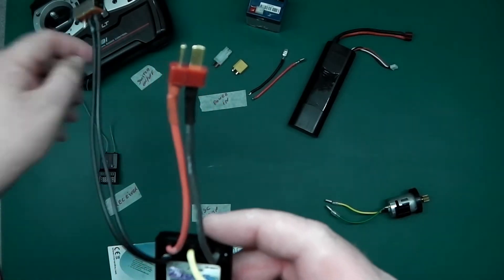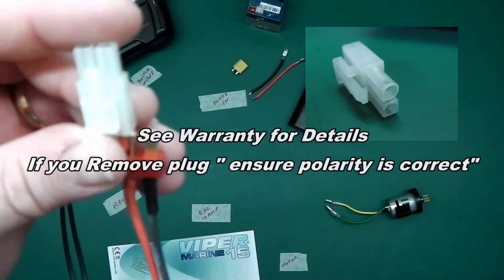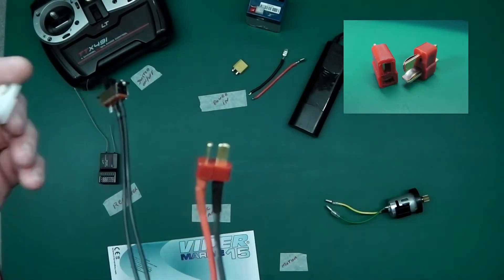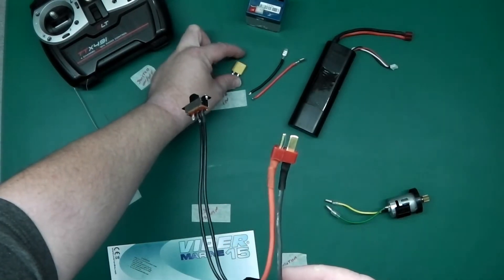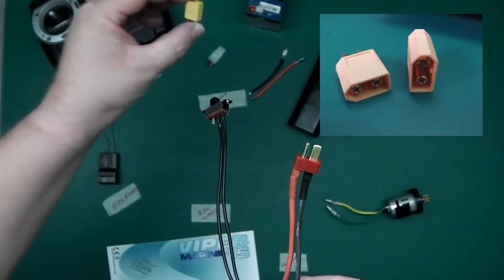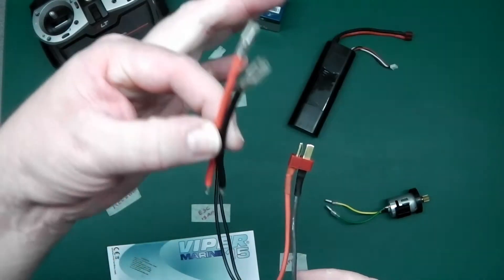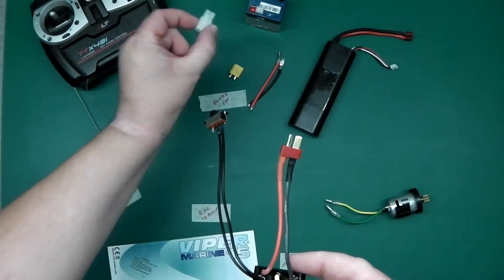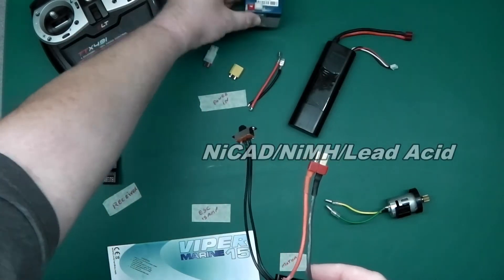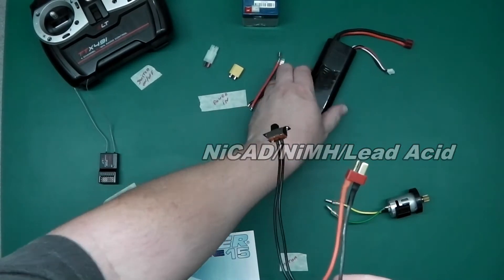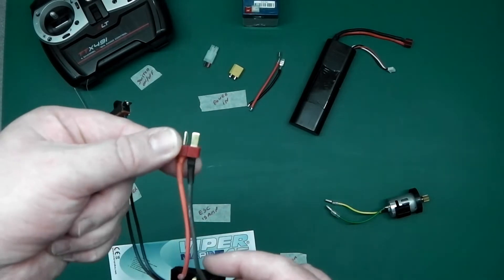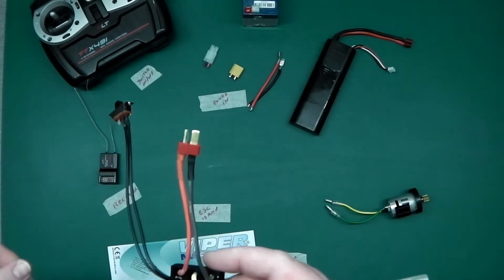Now, yours might come with a Tamiya plug. I removed that and replaced it with the Deans. As you can see, you can connect multiple plugs to it. Spade connections, XT-60s, Deans, Tamiyas, real lead-acid batteries, etc. Or your LiPos, your NiMHs, things like that. Today we're going to be using a Deans connector. Very simple connection, very reliable connection.